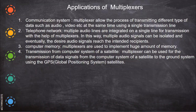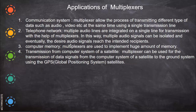Some applications of the multiplexer: it is used in communication systems, allowing the transmission of different types of data such as audio and video at the same time using a single transmission line. It was also used in telephone networks where multiple audio lines are integrated on a single line for transmission. In this way, multiple audio signals can be isolated and the desired audio signal reaches the intended recipient.